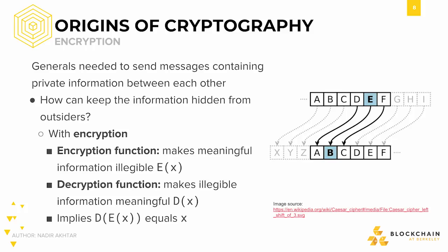Let's say Alice sends e to Bob, and Bob has the decryption function. This means that he can run the decryption function on e to get the original input x. In other words, d should always equal x. As long as only trusted third parties have access to the decryption function, only they can read the encrypted information.